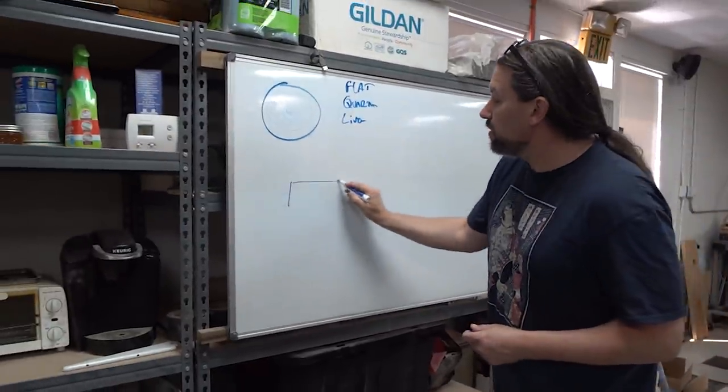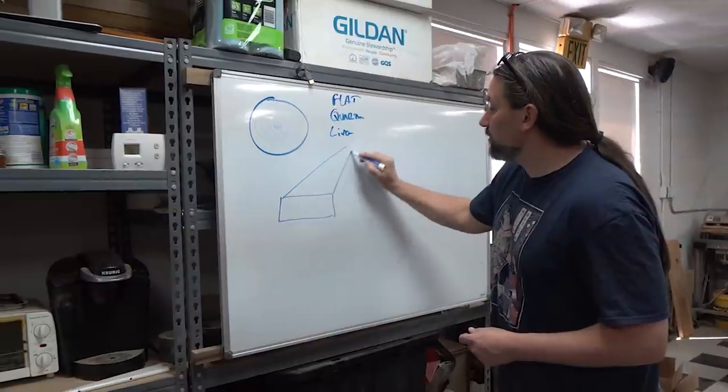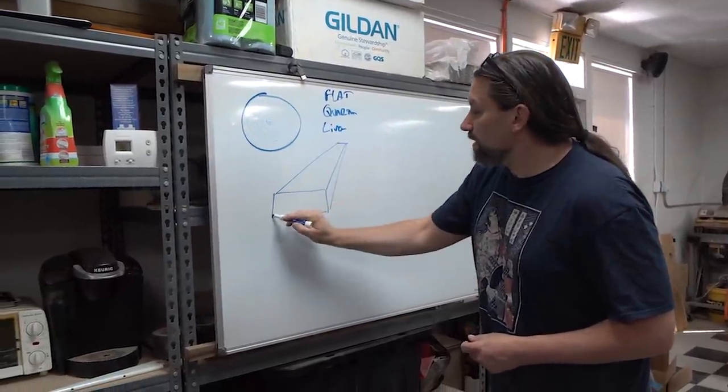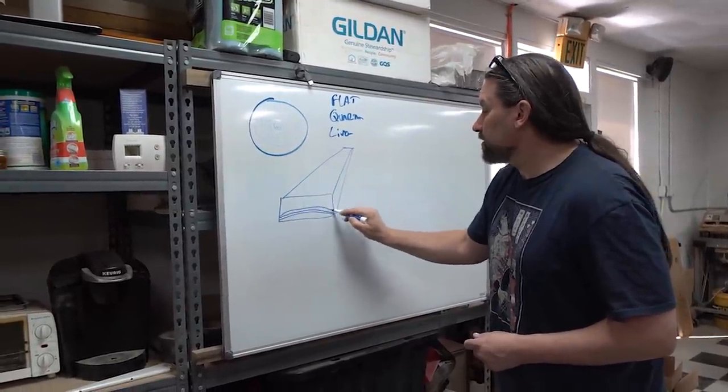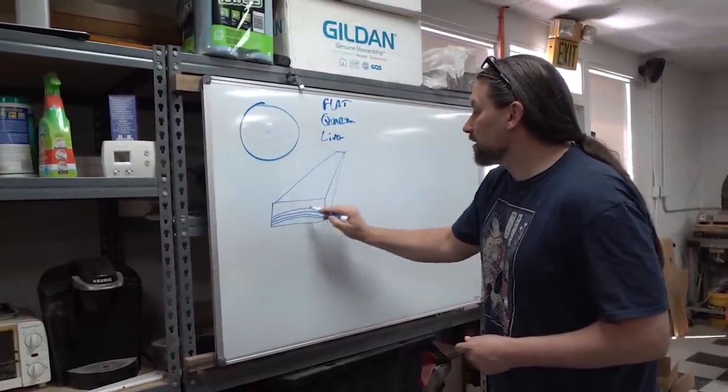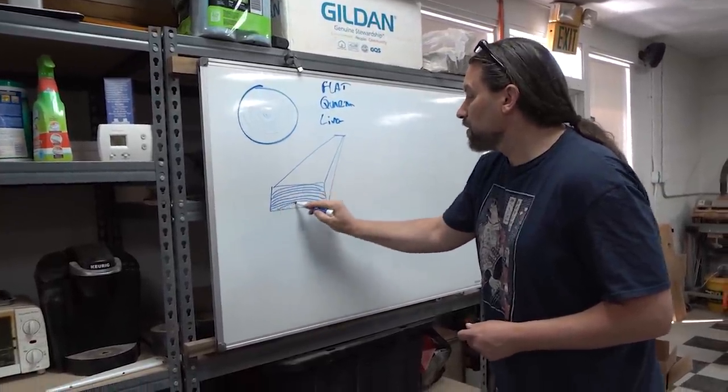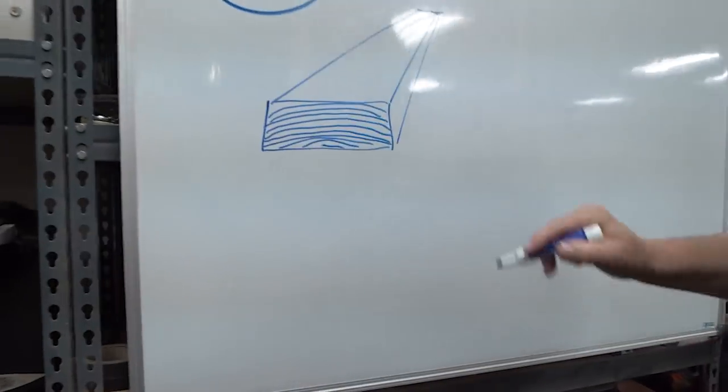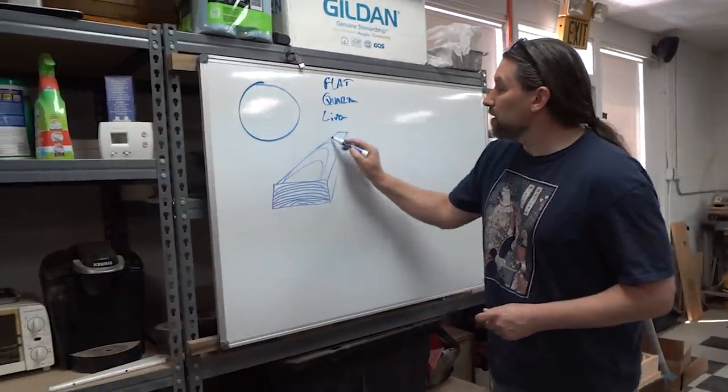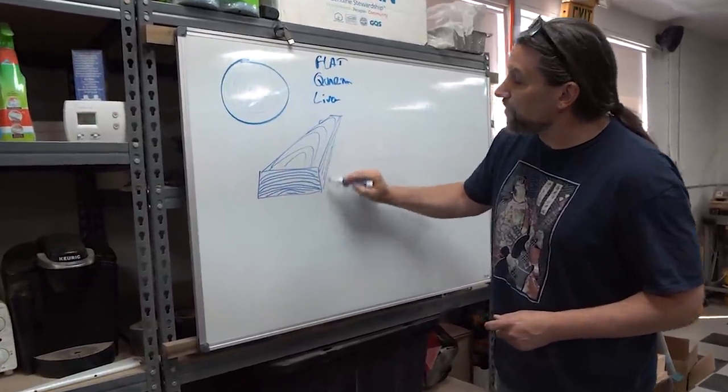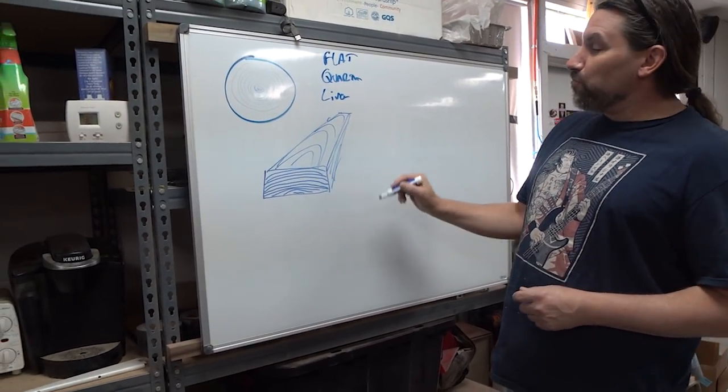So a flat sawn board, get a load of the perspective here. A flat sawn board will look from the end like this, ideally. Okay, and here's the growth rings that you get. And then usually it looks a little bit like this on the end and is straight through here. This is cathedraling.